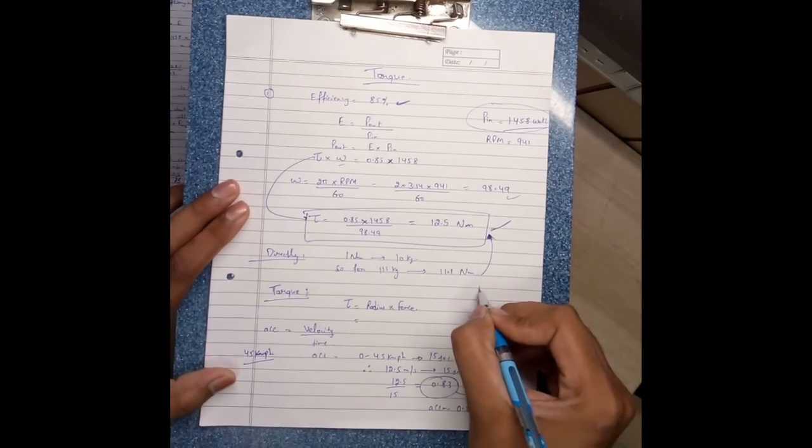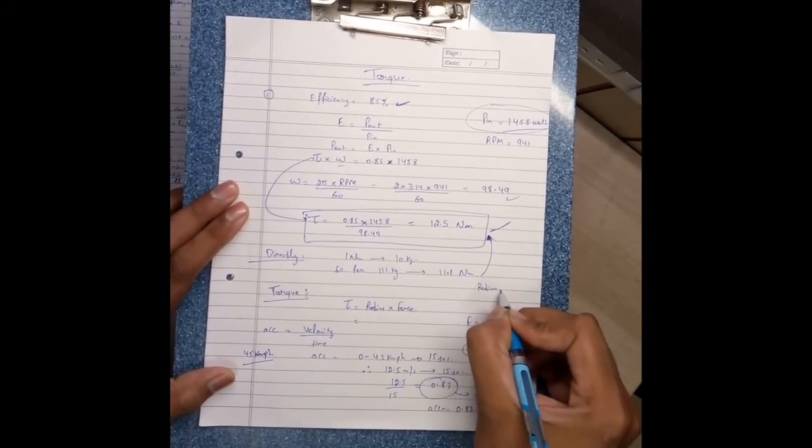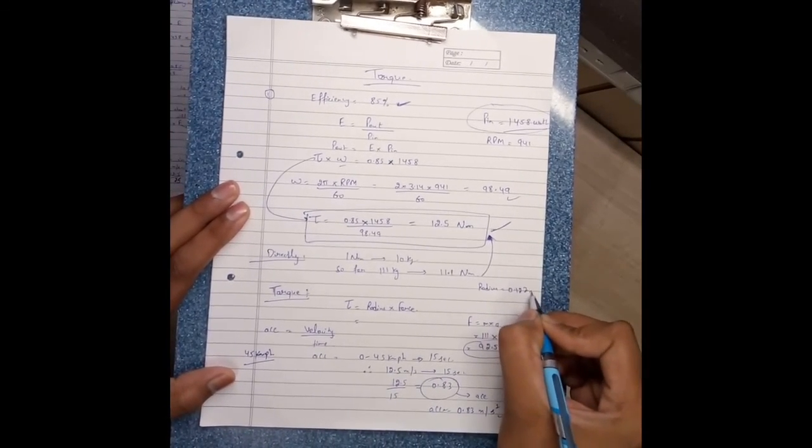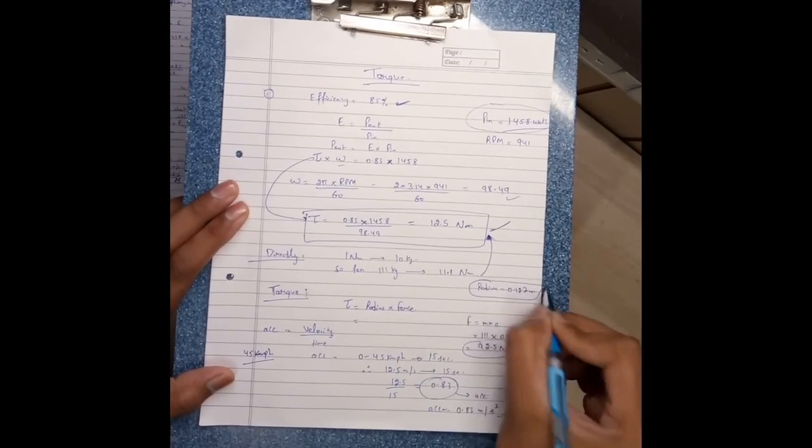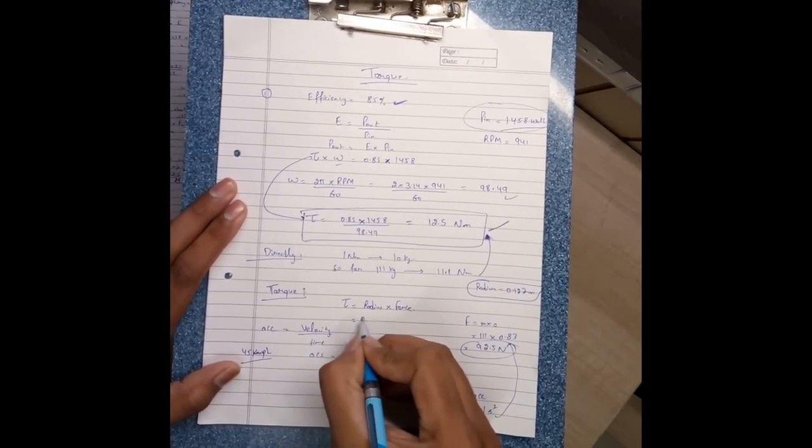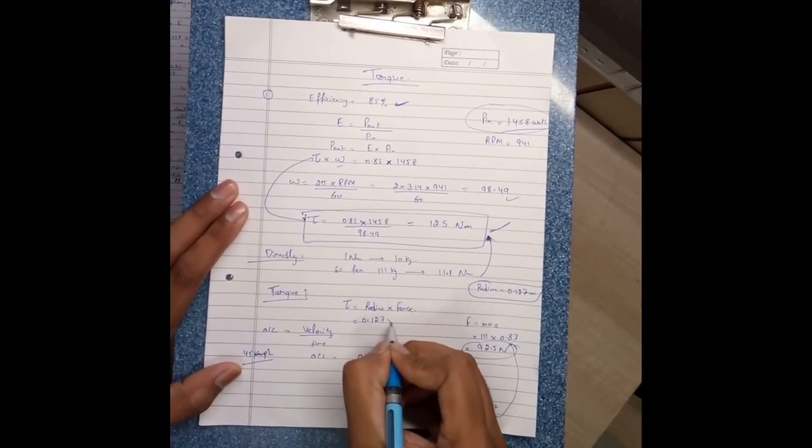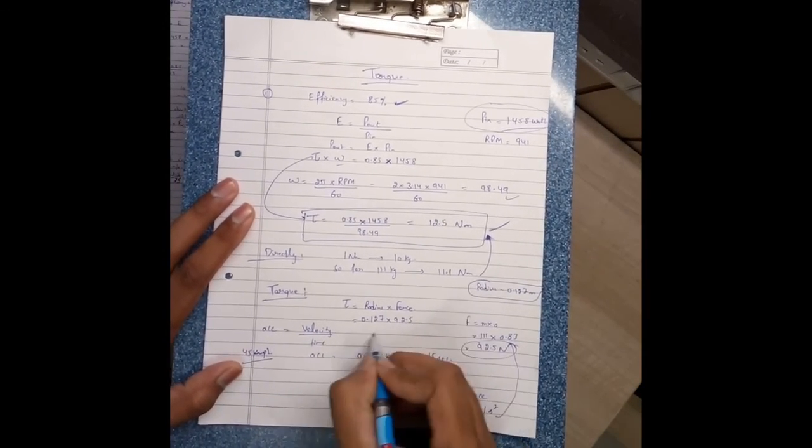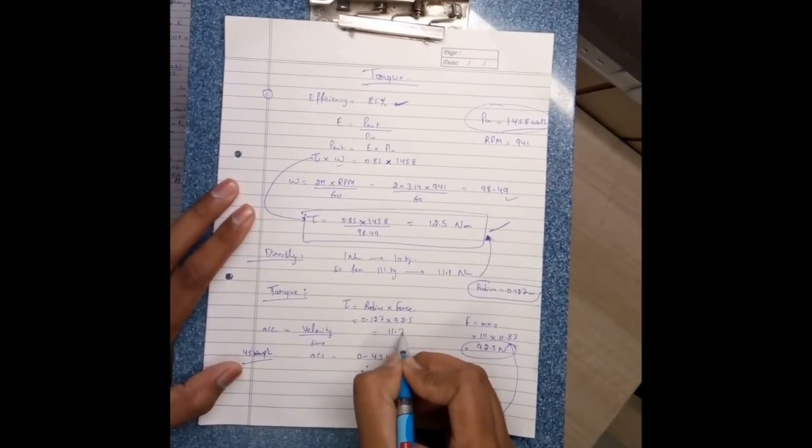From the last video, the radius equals 0.127 meters. Using radius times force: 0.127 times 92.5 equals 11.7 Newton-meters for torque.